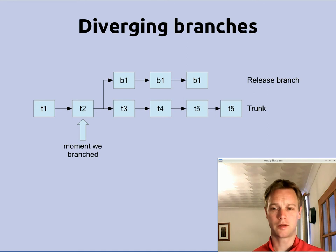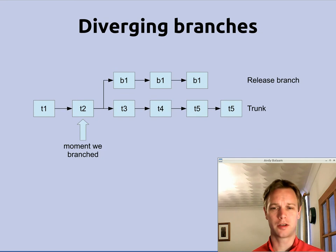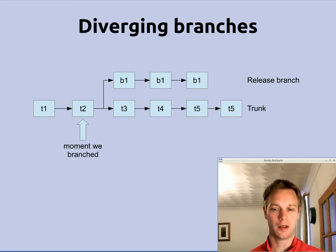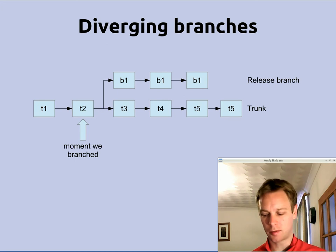The trunk is just your normal code where you are doing your normal work, working on features for the next version. After T2 we made a branch, and then there are some different versions going on in your branch labeled B1, B2, B3. The point is you are doing some work in that branch which is diverging slightly from the trunk. For example, you gave that version to a customer and made bug fixes for them, but they do not get all the latest features because those features are not properly tested and ready. So that is one scenario in which you would want to use a branch.